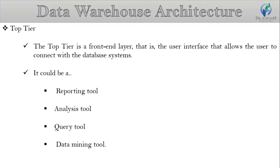Even when the bottom tier and middle tier are designed with the utmost care and clarity, if the top tier is enabled with untrained front-end tools, then the whole data warehouse architecture can become a total failure. This makes the selection of the user interface, or front-end tools, as the top tier a very significant part of the three-tier data warehouse architecture design process.